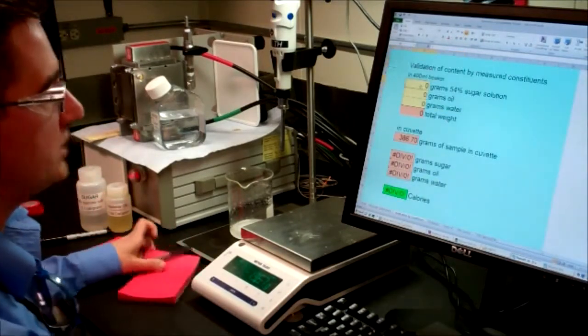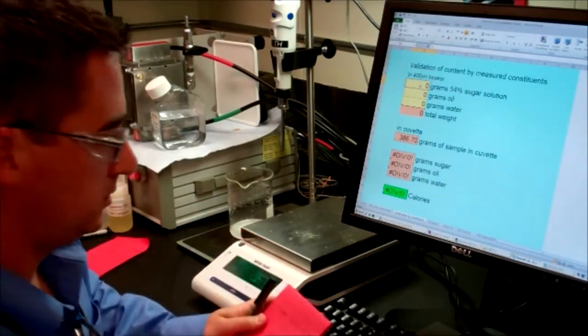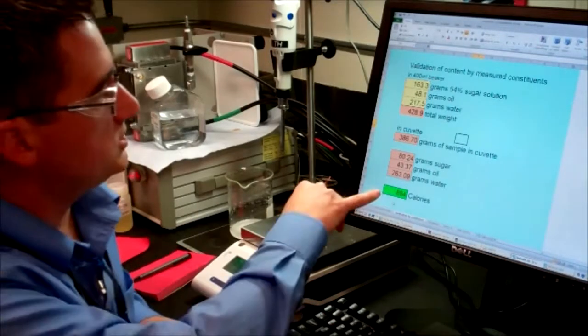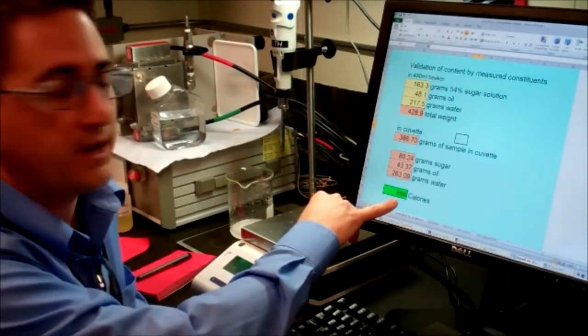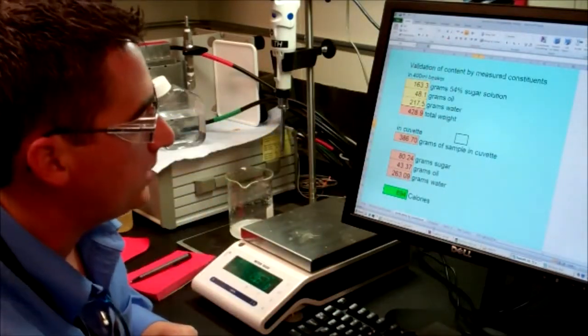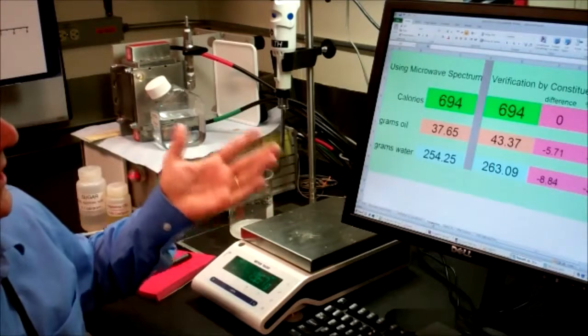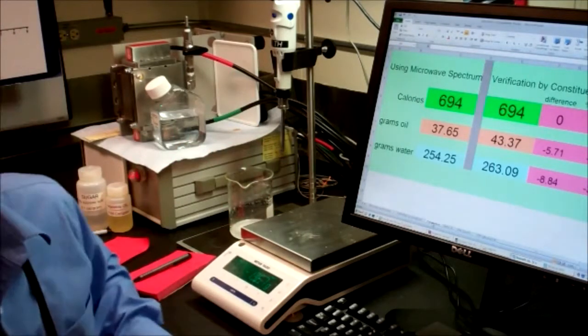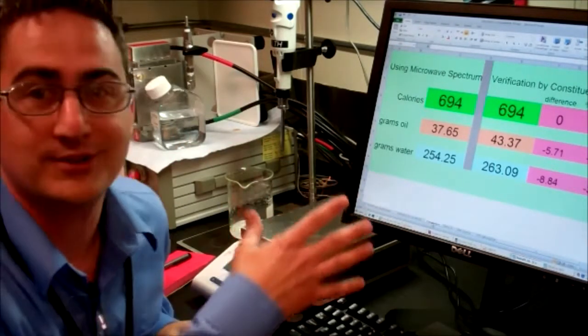Now we're going to put in those numbers that we put into the beaker. Okay, so you can see here we get an estimate of 694 calories. That's what we put in the beaker and then it tells us how much we actually poured into that cuvette. And then what we have is a comparison where we can see we're exactly on, which is a rare occurrence.